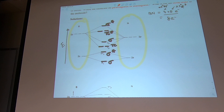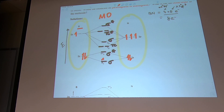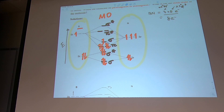Boron contributes 3 electrons and nitrogen contributes 5 electrons. What matters most is filling them into the MO diagram in the middle. We count electrons one through seven into the molecular orbitals, filling from lowest to highest energy.